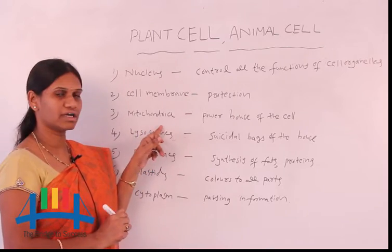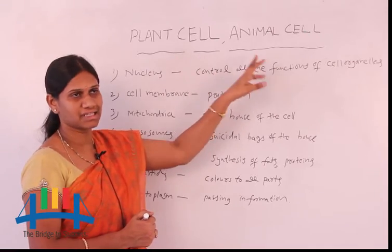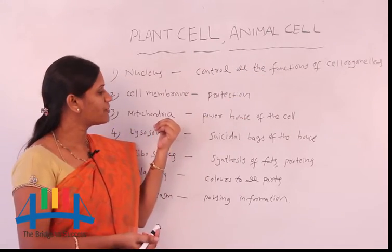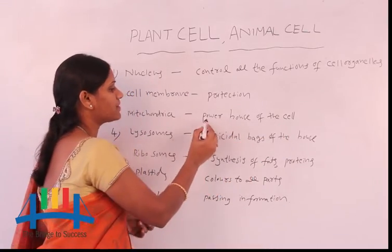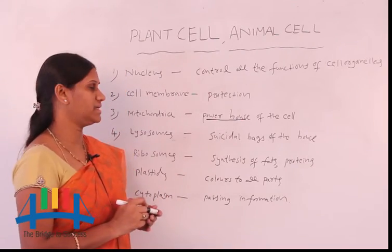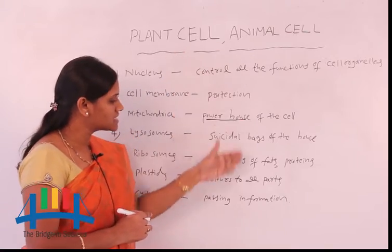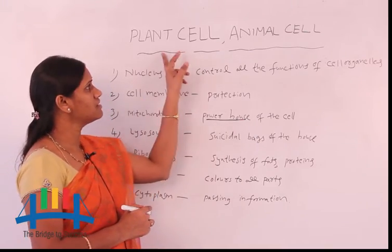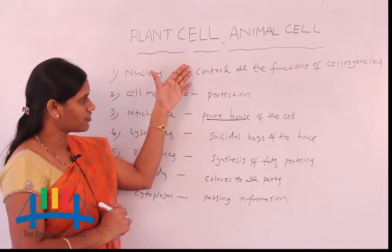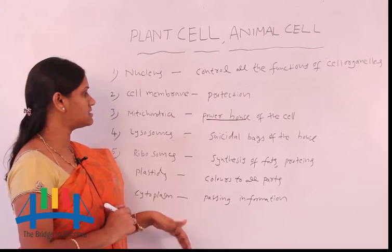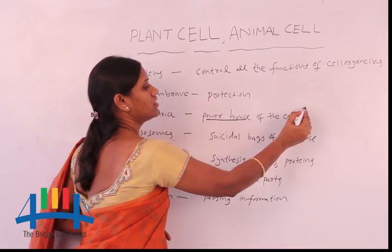The third one is mitochondria, which plays a major key role in both plant and animal cells. Mitochondria is also known as the powerhouse of the cell. Here, power means energy — energy is stored in the mitochondria. It provides energy for the remaining functions of all cell organelles present in the plant cell and animal cell. That is why it is called the powerhouse of the cell.